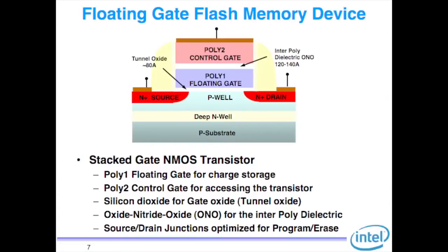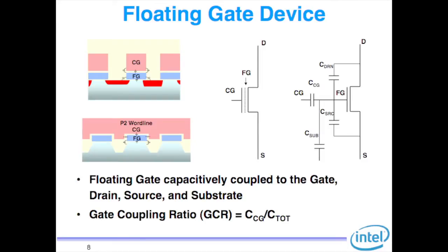A floating gate flash memory looks quite a bit like a transistor but with some key differences. You have a Poly-1 floating gate, a tunnel oxide (silicon dioxide), an interpoly dielectric which is ONO (oxide-nitride-oxide), and source/drain junctions optimized for this operation. Electrically, the floating gate node couples to the drain, source, substrate, and control gate through different capacitances.